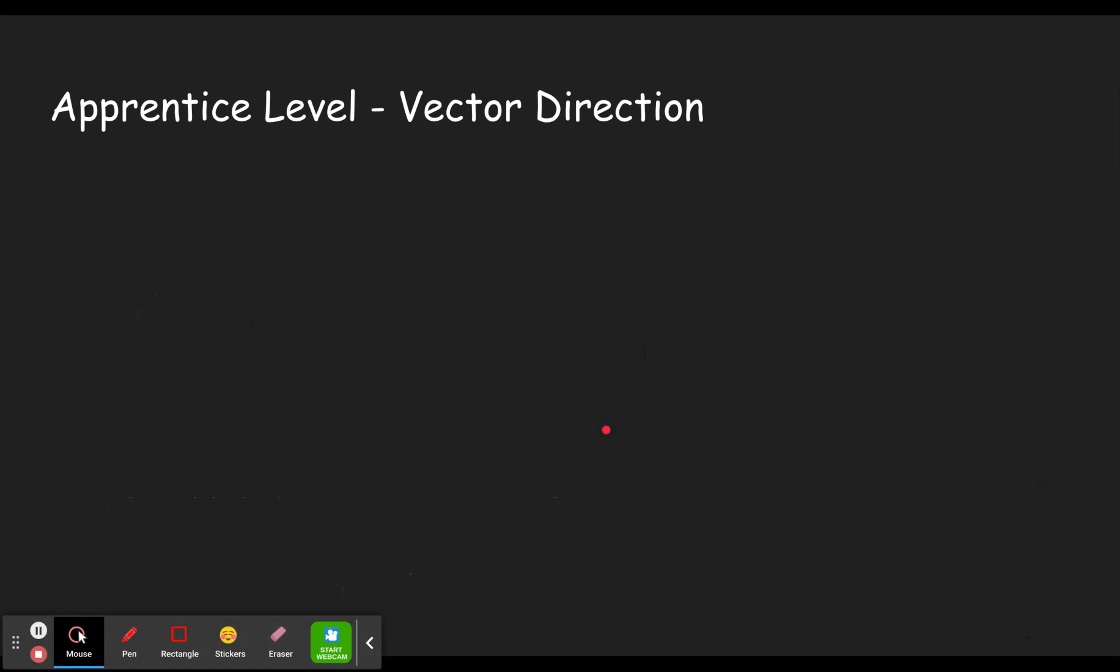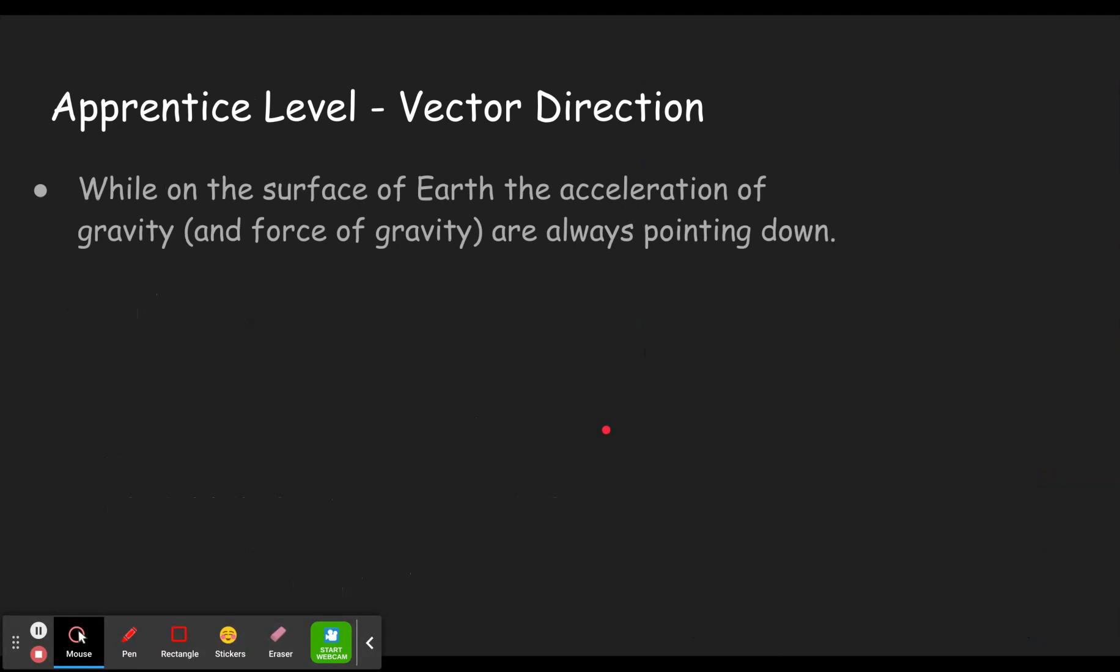So there are two different things you'll have to do at the apprentice level. First one is vector direction. Keep in mind, while on the surface of the earth, the acceleration of gravity and the force of gravity are always pointing down. Gravity never pulls you up on the surface of the earth.